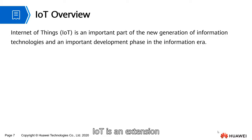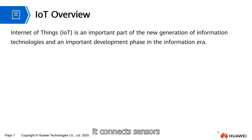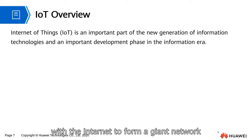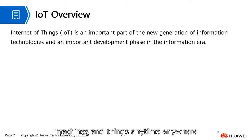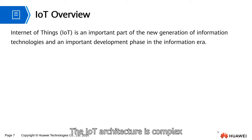IoT is an extension and expansion of the internet. It connects sensors with the internet to form a giant network, implementing interconnection of people, machines, and things anytime, anywhere. The IoT architecture is complex.